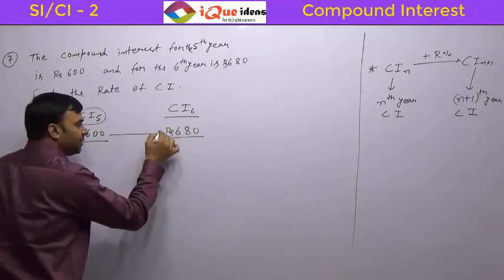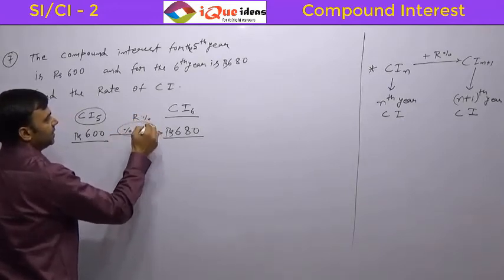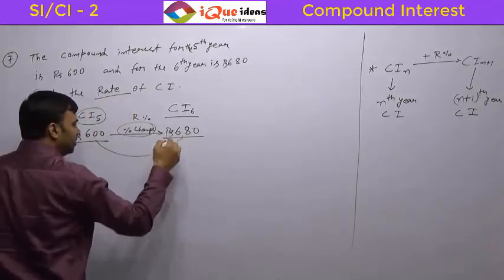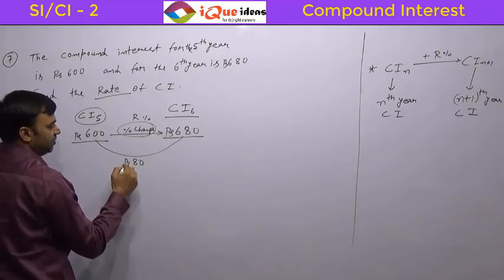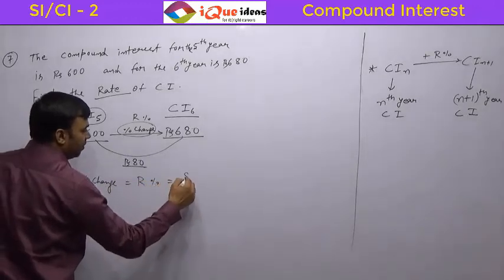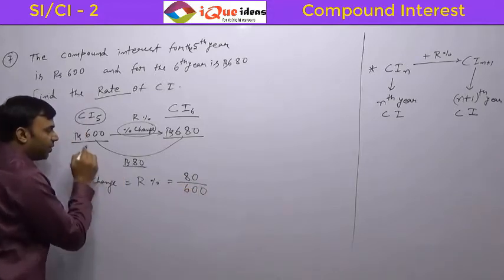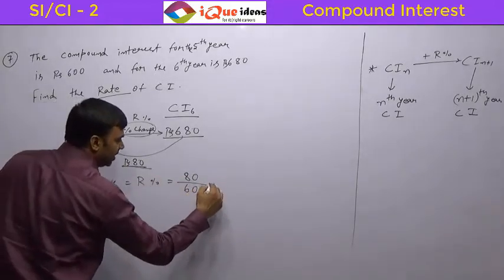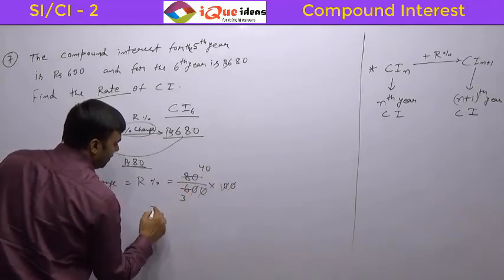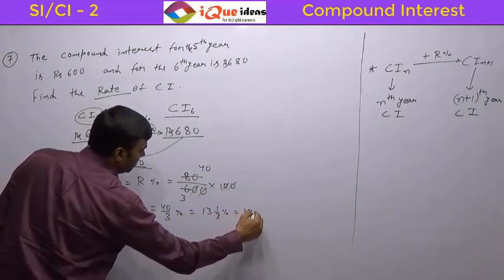Whatever is the percentage change from year to year, it is R percent — the rate percentage. The value change is 680 minus 600, which is Rs. 80. The percentage change equals the value change divided by initial value: 80 upon 600 into 100. Simplifying, the zeros cancel to give 40 by 3 percent, which is 13 and 1/3 percent or 13.33 percent.